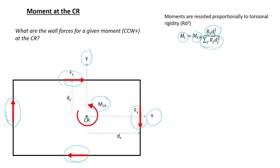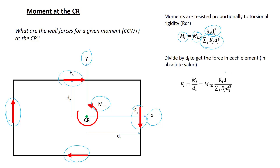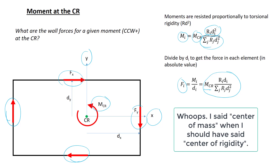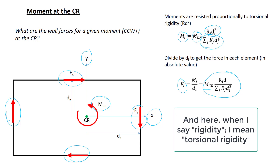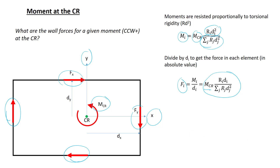What we're actually interested in is the force in each component, so we divide this equation by d. We get an expression that tells us the force in each wall as a function of the moment at the center of rigidity and the wall's rigidity relative to all other walls. So far we've been dealing in absolute value. If you want the actual direction of the forces, you need to think physically, but it is possible to come up with an algebraic expression where the direction comes out naturally.